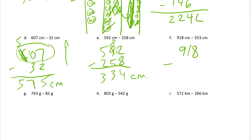918 minus 553. We have plenty of ones this time — we have eight, we can take away three ones and have five ones left. But one minus five — we don't have enough tens to take away five tens, so we have to unbundle one of these hundreds. That gives us ten more tens. Plus the one we already have means we now have eleven tens. Eleven minus five is six. Eight minus five is three.